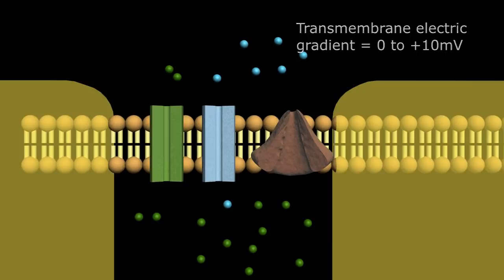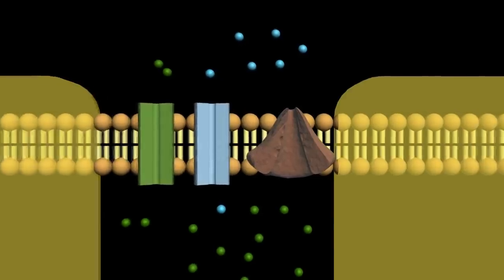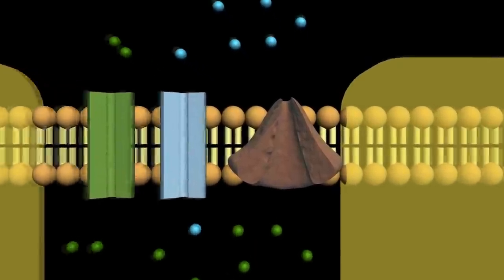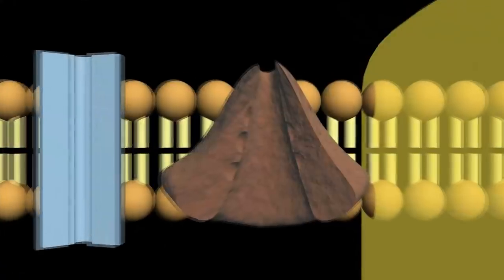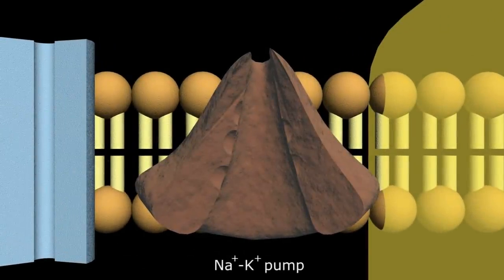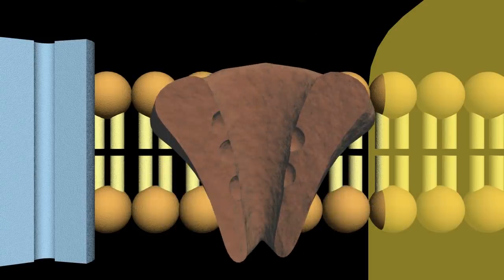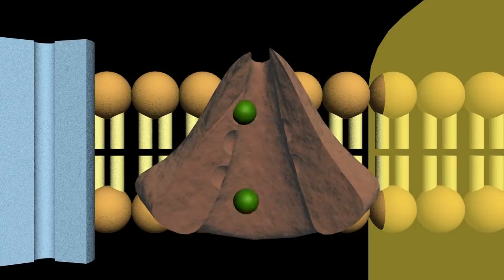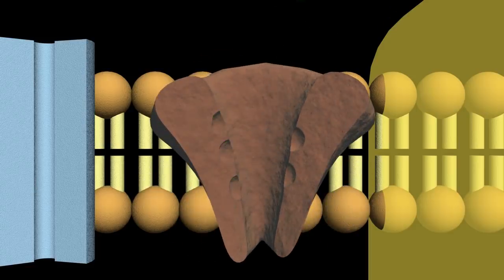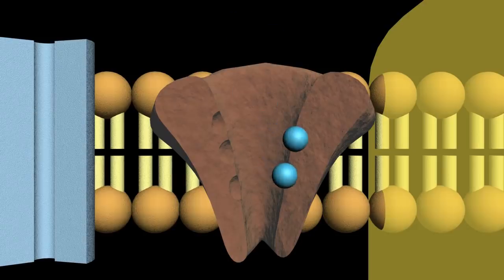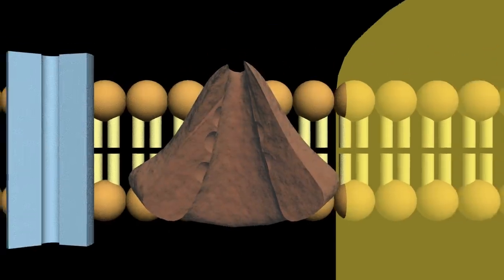To return the membrane potential to its baseline minus 70 millivolts, energy is required to push the sodium and potassium ions against their respective gradients. This is accomplished with the transmembrane sodium-potassium pump. Utilizing the energy-storing molecule ATP, the sodium-potassium pumps move the ions against their respective gradients. With each pumping cycle, three sodium ions are moved out of the cell and two potassium ions move into the cell. With this asymmetric ion movement, the baseline minus 70 millivolt membrane potential is restored and the cell is now ready to fire again.